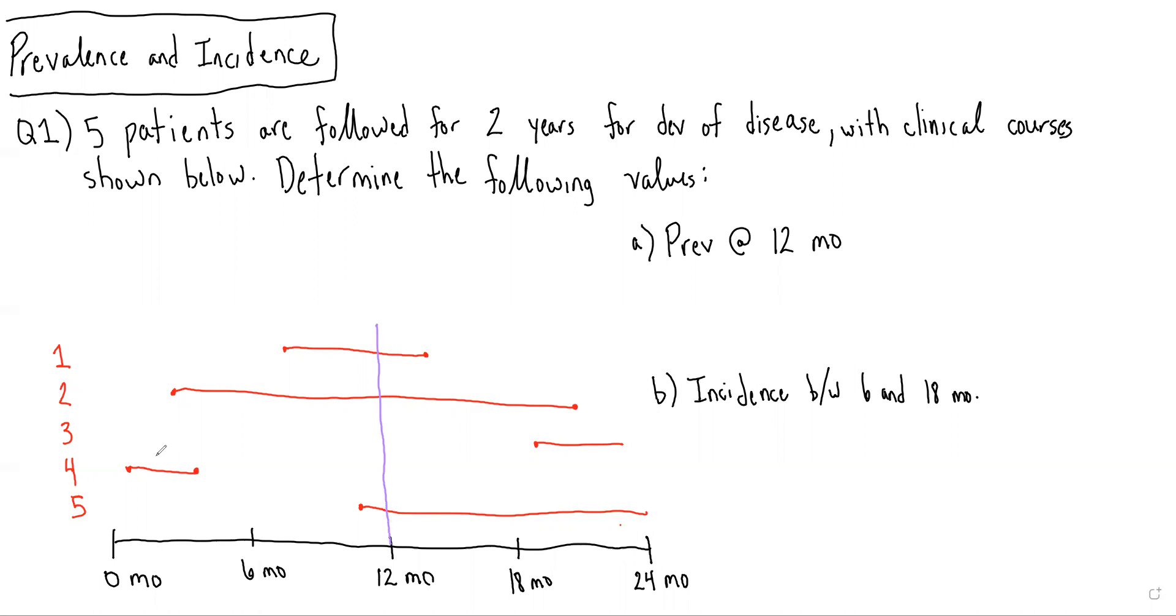So we see that patient four will have already died prior to six months, and therefore, the prevalence at 12 months would be one, two, three over four.